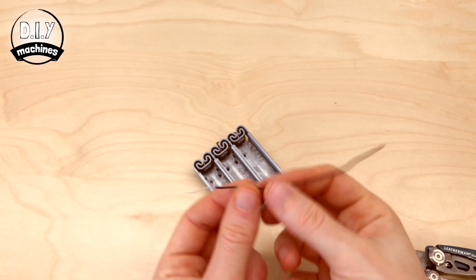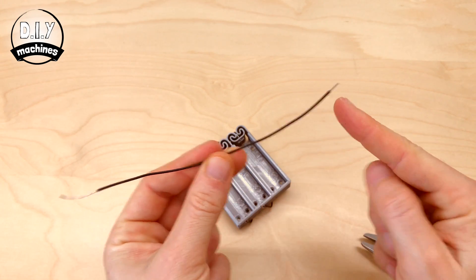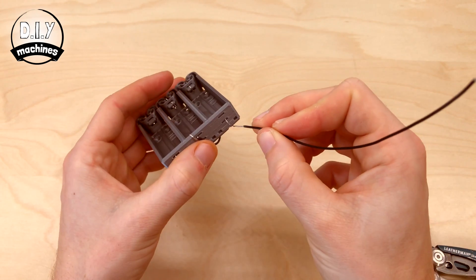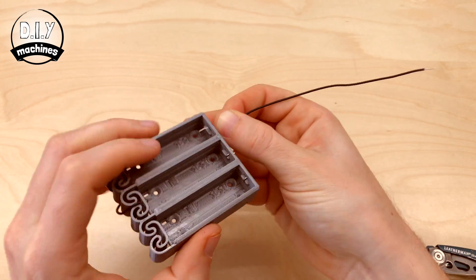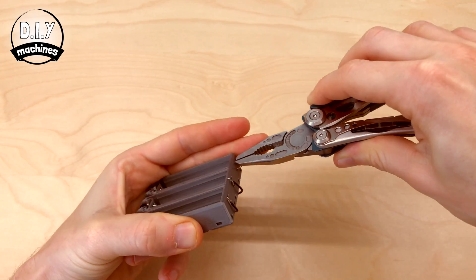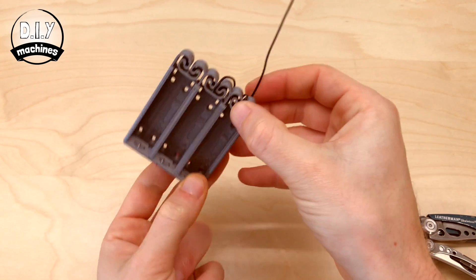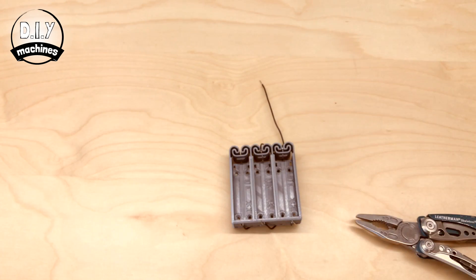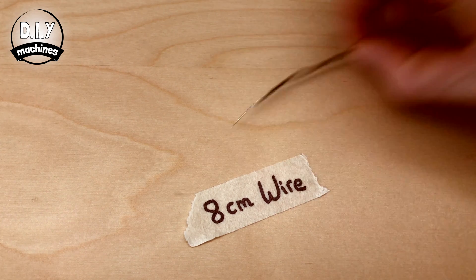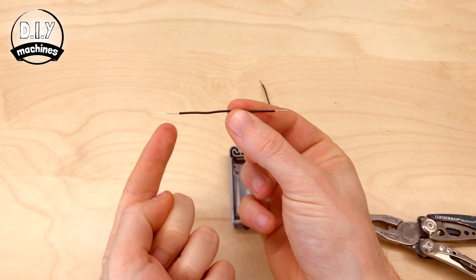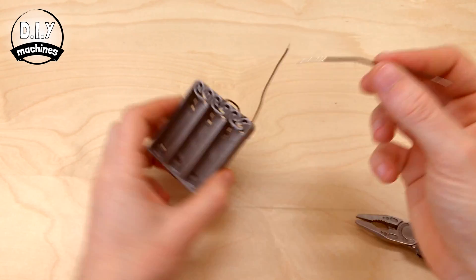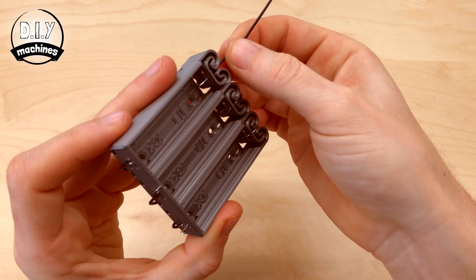This wire has one end more exposed than the other. The more exposed end will go inside the battery holder. Like the previous wire, this wire has one end more exposed than the other, and again the long end is to go into the battery holder.